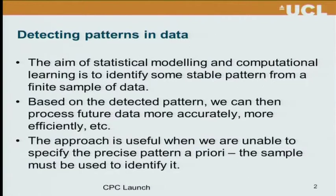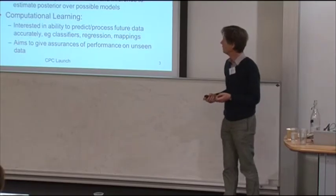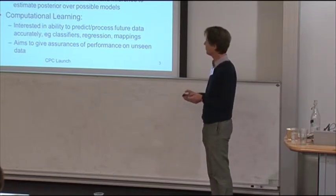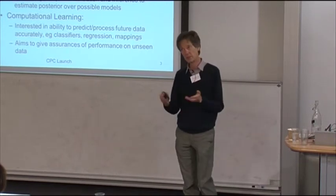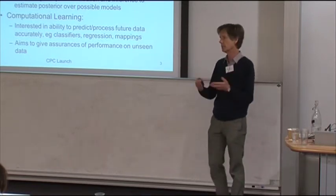Detecting patterns in data is what we're about, and the aim of statistical modeling and computational learning is to identify stable patterns from a finite sample of data. The approach is useful when we're unable to specify the precise pattern a priori — it's actually extracting information from the sample of data. In statistical modeling, the interest is in inferring the underlying structure: the clusters, some parametric model, the underpinning network. Techniques frequently involve setting up a prior distribution over possible structures, applying inference based on the observations, and estimating a posterior distribution to make predictions.